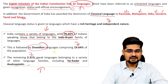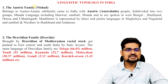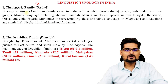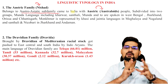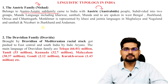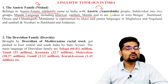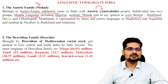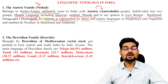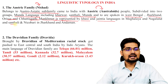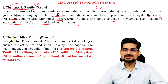Looking at linguistic typology in India: the Austrik family, also called the Nishadha family, belongs to the Austro-Asiatic subfamily and came to India with Austroloid people. It is subdivided into Munda languages — Kharwar, Santhali, Munda — spoken in West Bengal, Jharkhand, Odisha, and Chhattisgarh. Monkhmer is represented by Khasi and Jaintia languages in Meghalaya and Nagaland. Santhali and Nicobari are found in Jharkhand and Andaman. These are all Austrik family languages.